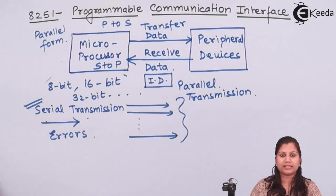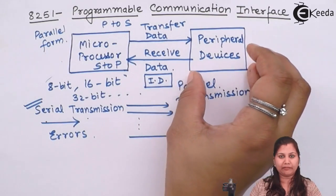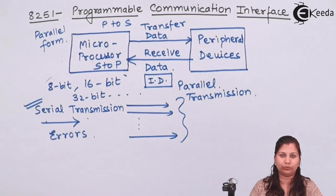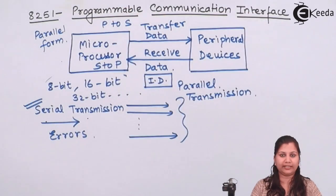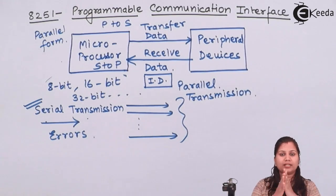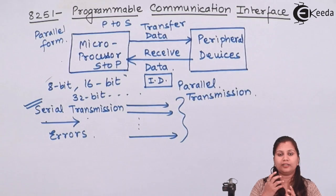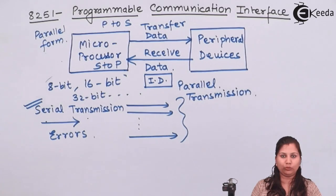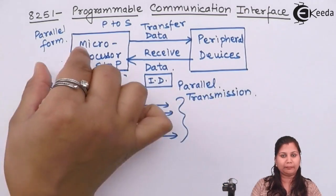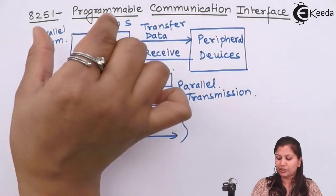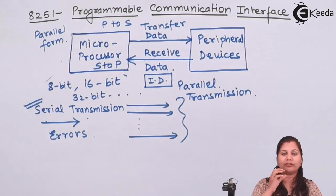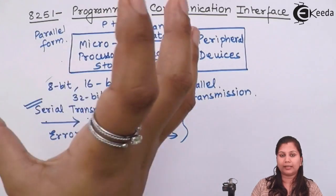This is called an interfacing device because it acts in between the microprocessor and the peripheral device, acting as a communication link between the two. For this purpose, Intel has developed a device known as the Programmable Communication Interface, which acts as an interfacing device between the microprocessor and the peripheral devices. It is called programmable because we can write programs, instructions, and command word/status word in it — so it can be programmed.